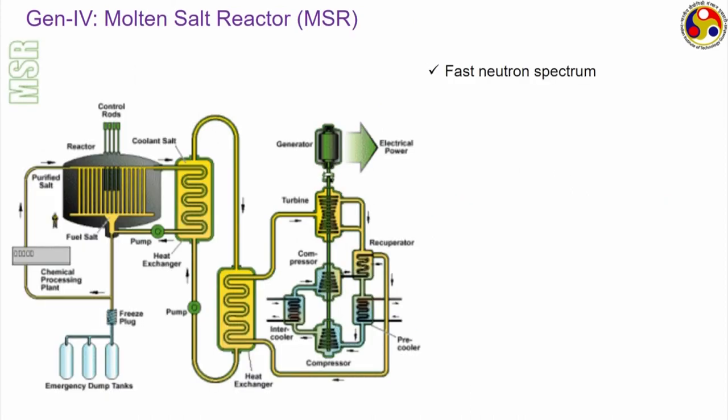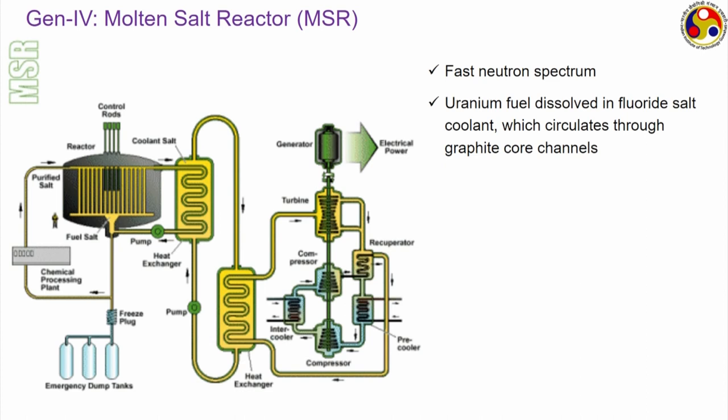Molten salt reactors (MSR) — again a fast reactor — use uranium fuel dissolved in some kind of fluoride salt coolant which circulates through graphite core channels. It attains slightly lower temperatures, in the range of 700 degree Celsius. A big advantage is the flexibility in the form of fuel used — as fuel is dissolved into the coolant, no cladding is required and different kinds of fuels can be used.